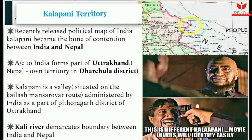Let's start with the first issue: Kalapani territory. Recently, the released political map of India made Kalapani a bone of contention between India and Nepal. According to India, Kalapani forms part of Uttarakhand — specifically the Pithoragarh district — while Nepal claims that Kalapani is its own territory in the Dharchula district. Kalapani is a valley situated on the Kailash Mansarovar route, administered by India as part of Pithoragarh district of Uttarakhand.